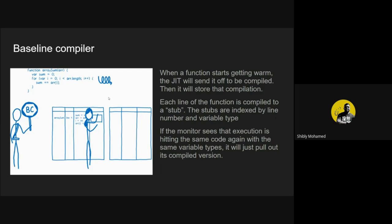When the monitor recognizes a warm function, it sends it to the baseline compiler. The baseline compiler compiles the function and stores that compilation. Each line of the function is compiled into a thing called a stub; stubs are indexed by line number and variable types. If the monitor sees that execution is hitting the same code with the same variable types without changing those types, it will pull out its compiled version, making the code run faster.